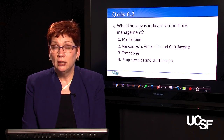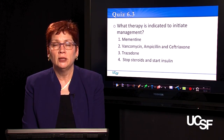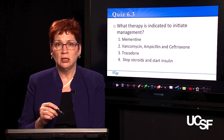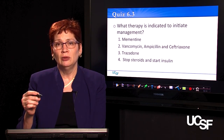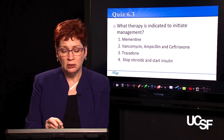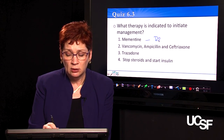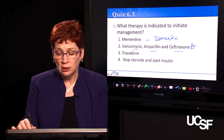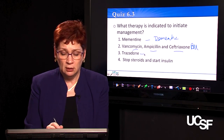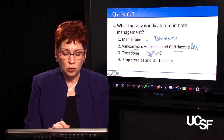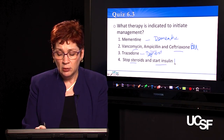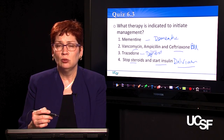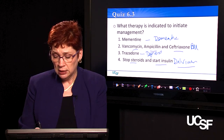One of the questions we could ask with this clinical stem — instead of what's the likely diagnosis — is what therapy is indicated to initiate management for this patient. To answer a therapy question, you have to have the right diagnosis. If you chose memantine, you thought the diagnosis was dementia. If you chose vancomycin, ampicillin, and ceftriaxone, you'd say it's bacterial meningitis in the elderly. If you chose trazodone, you thought the most likely diagnosis was depression. And if you chose stop the steroids and start insulin, you'd say the most likely diagnosis was delirium. Compare-and-contrast thinking around the right diagnosis is critical for these clinical questions on exams.